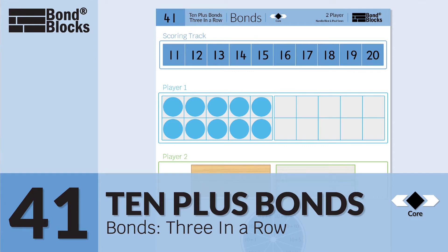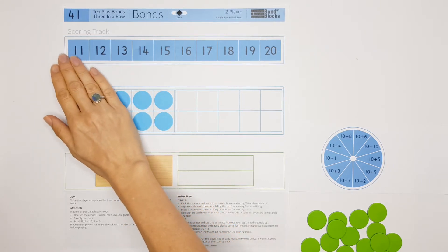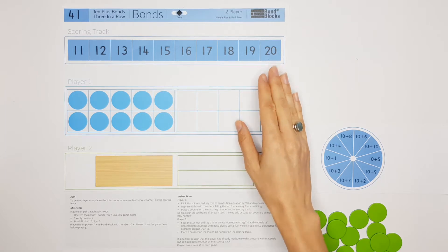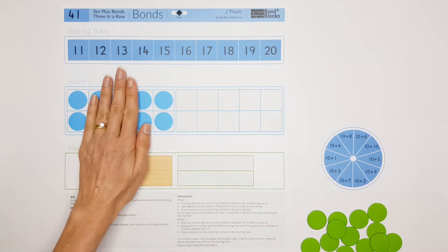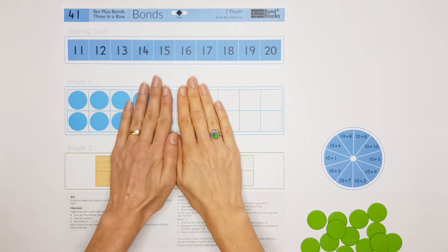Welcome to activity 41. In this activity we will be developing the concept that numbers between 10 and 20 can be made up of two parts: a part of 10 and one other part. These two parts join together to be equal to the whole.